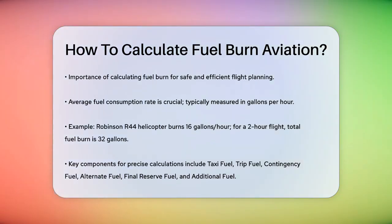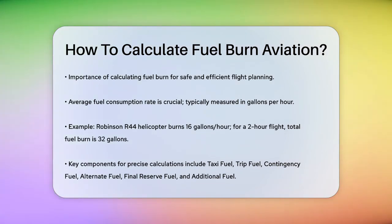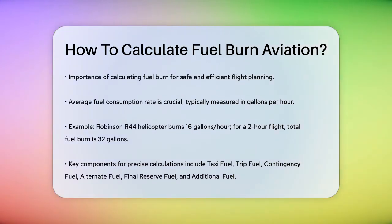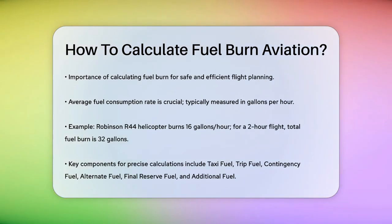First, you need to know the average fuel consumption rate of your aircraft, usually measured in gallons per hour. For example, a light helicopter like the Robinson R44 burns about 16 gallons of fuel per hour. If you're planning a two-hour flight, you can estimate the total fuel burn by multiplying the fuel consumption rate by the flight duration: 16 gallons per hour times two hours equals 32 gallons.